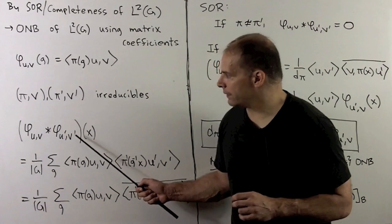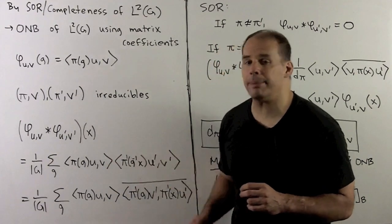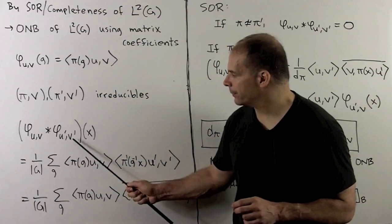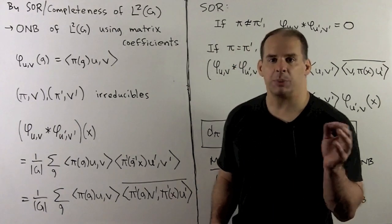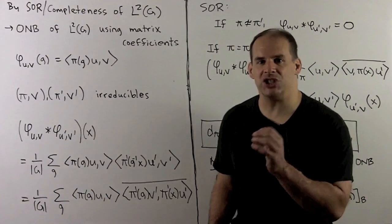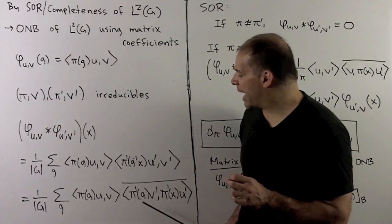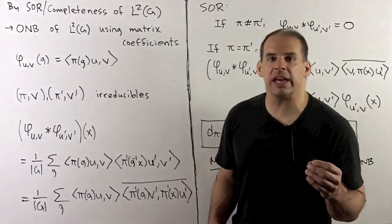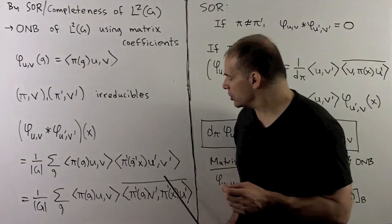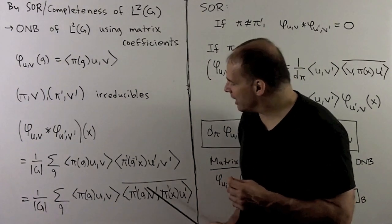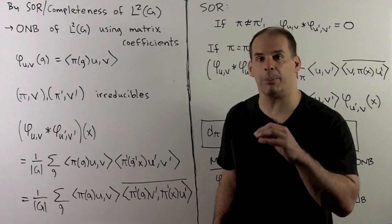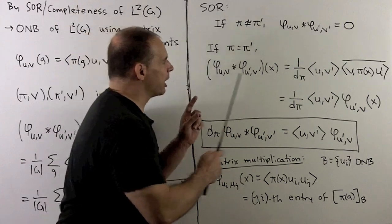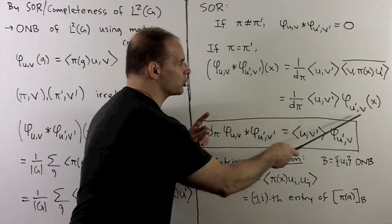Now let's take the convolution of two matrix coefficients, one for pi and one for pi prime, both irreducible. We evaluate at x and write out the definition: the first one gets a g, the second gets a g-inverse x. We sort out the second term by splitting the product using the homomorphism property of pi prime, then move g-inverse to the other side as g using unitarity. To get g back in the first coordinate, we switch the entries and introduce a complex conjugate. This term we can evaluate using the Schur orthogonality relations. If pi and pi prime are inequivalent, we get zero. If they are equal, we divide by the dimension and pair the first entries and second entries in inner products. If they are inequivalent, convolution goes to zero; if they are equal, we get this expression, and switching the order to remove the bar gives us the matrix coefficient for u prime and v.